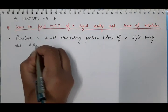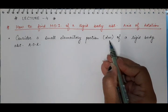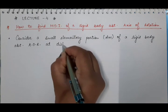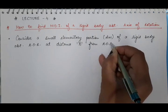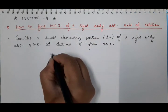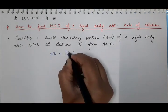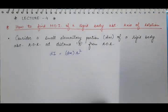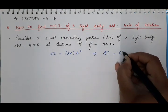This elementary mass dm lies at some distance r from the axis of rotation. As the mass of the elementary portion is small, its moment of inertia will also be small — it will be dI. The definition of moment of inertia is the product of mass into the square of the distance from the axis of rotation, so dI = r² dm.